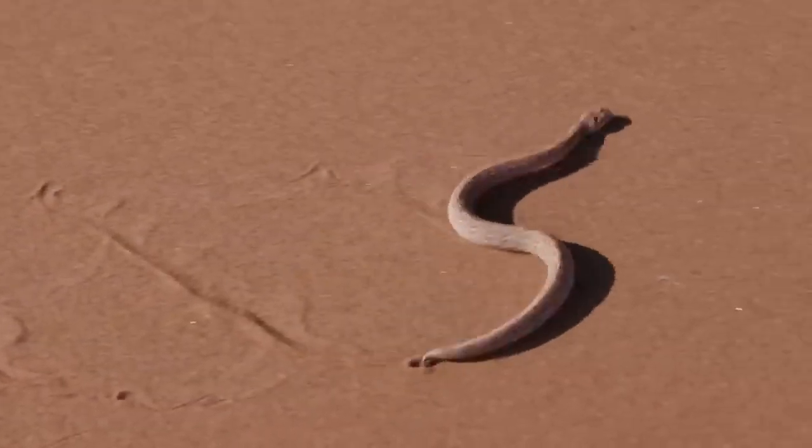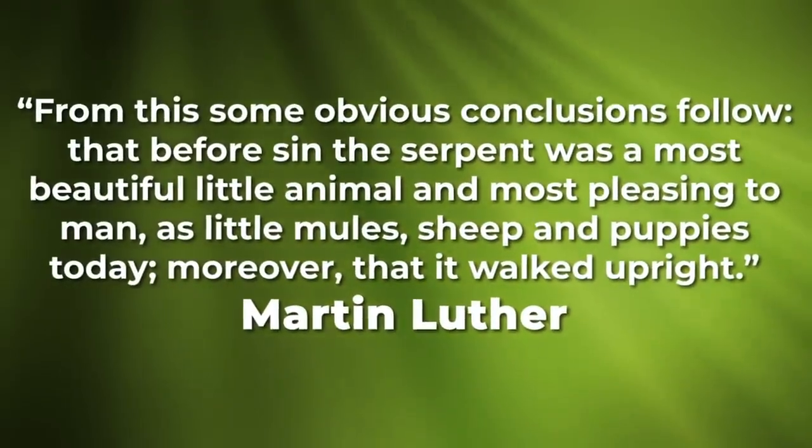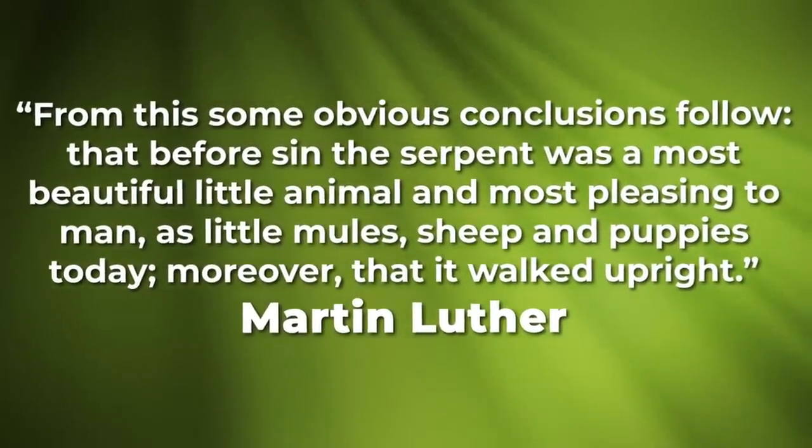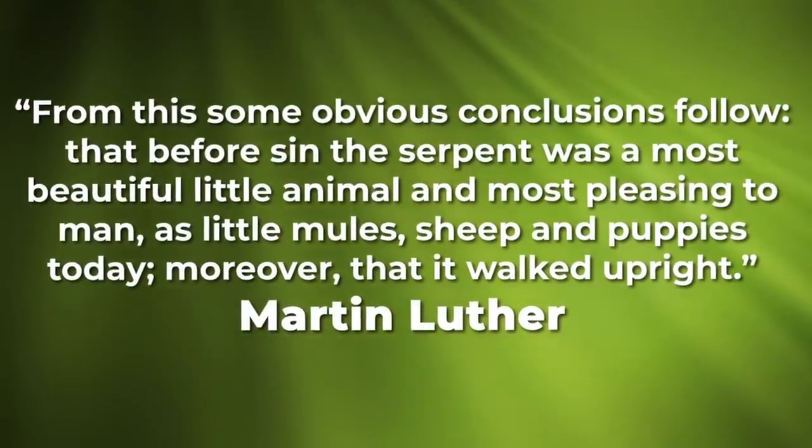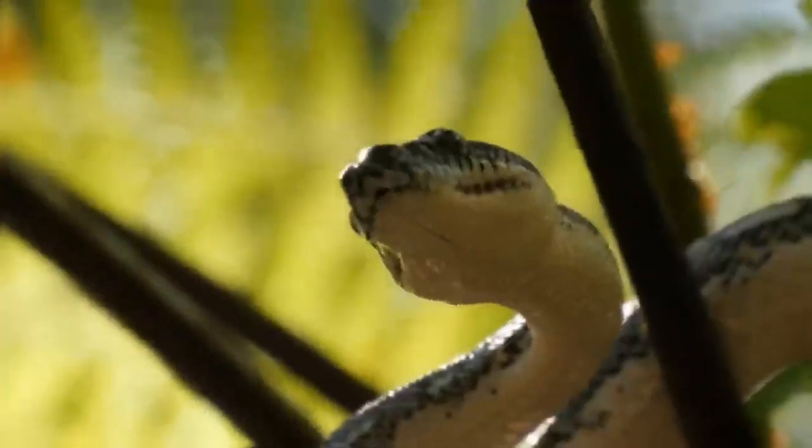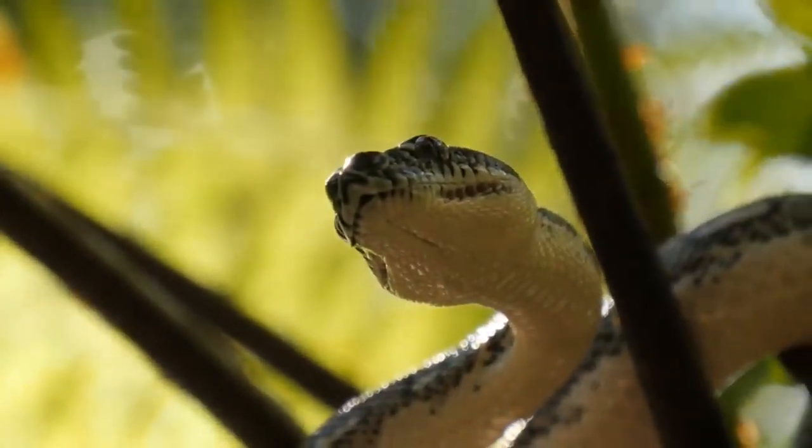We do find a handful of commentators who say, not necessarily — maybe the serpent really did slither, and this is basically the Lord just putting him in his place. That Hebrew word, the 'nachash,' which is basically used for serpent — a lot of those commentators, for example Adam Clark, he said, 'Upon thy belly shalt thou go, thou shalt no longer walk erect, but mark the ground equally with thy hands and feet.' And even Martin Luther said that too. He said, 'From this, some obvious conclusions follow: that before sin, the serpent was a most beautiful little animal and most pleasing to man, and moreover that it walked upright.' Most of those commentators believe the serpent walked upright. Now we have some exceptions, like John Calvin, who believed it was more of a symbolic thing — just putting it in its place — but obviously there are some problems with that.